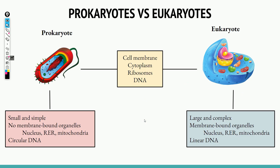Prokaryotes versus eukaryotes: the first thing to understand is that all cells, no matter what type, have four basic things — a cell membrane, cytoplasm, ribosomes, and DNA. I'm assuming you already have a decent idea of the functions of each, and I will cover this in a separate video on cell structures. But ultimately, the difference between prokaryotic and eukaryotic cells is that prokaryotic cells are more simple and less complex.